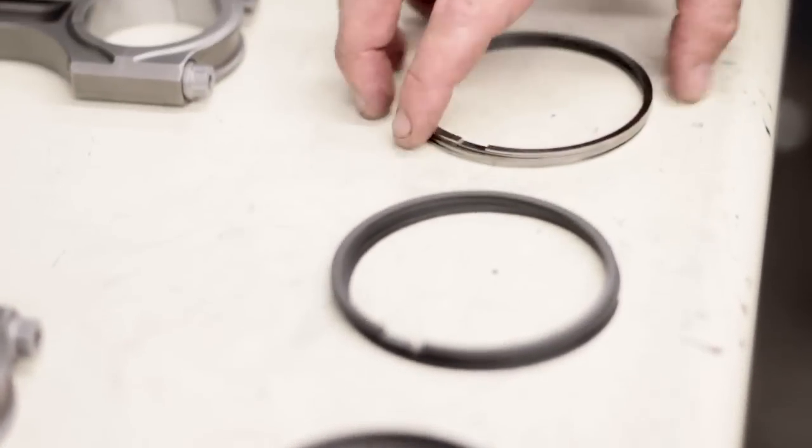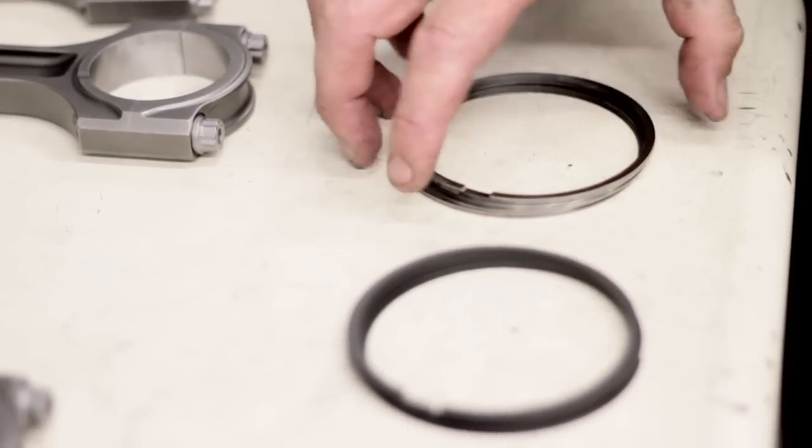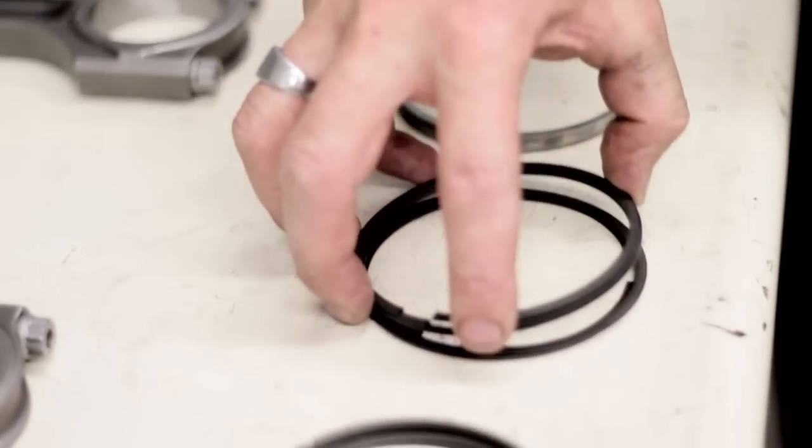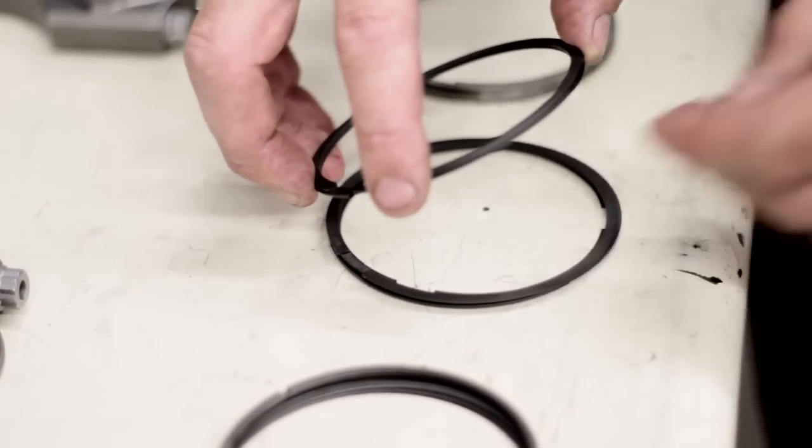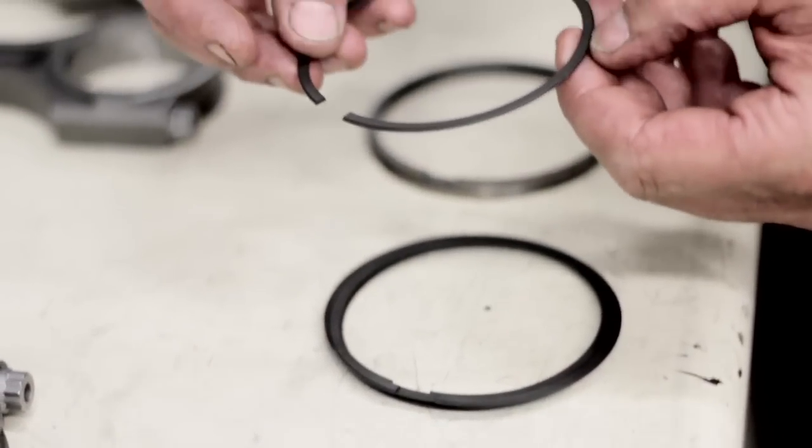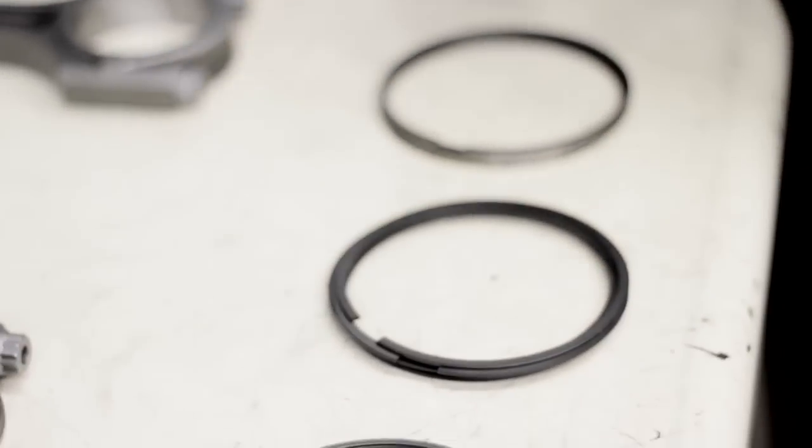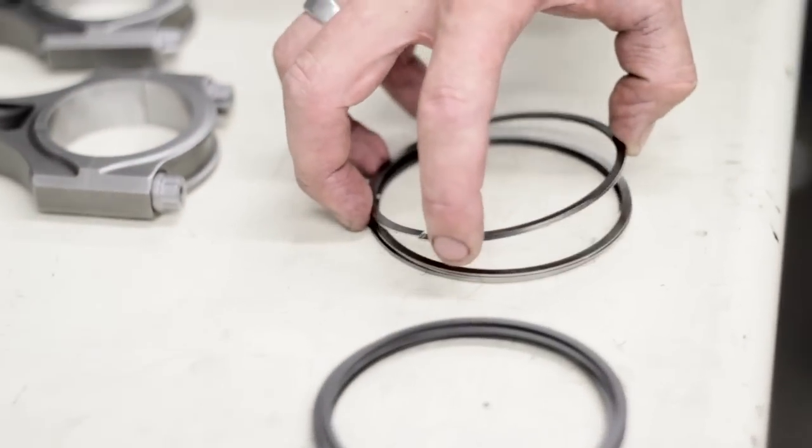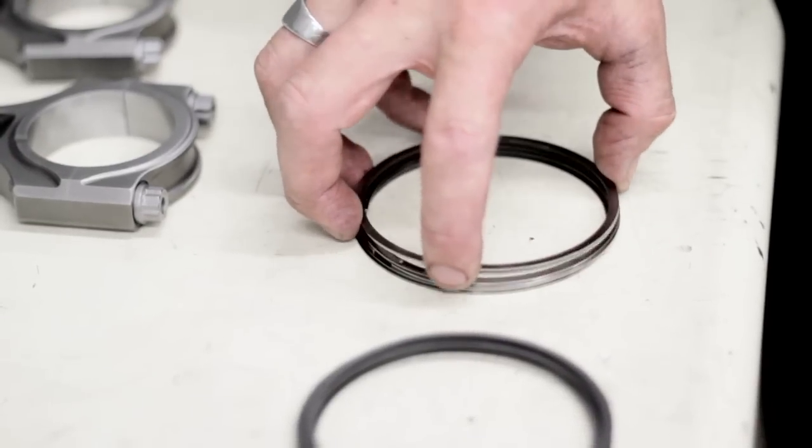The piston rings also I wanted to talk about. It's a plasma moly on the second ring. It's actually got a little bevel cut into the ring which is helping scrape oil off the cylinder wall. The top ring is a ductile iron ring which will take a lot of heat and a lot of abuse from turbo boost.